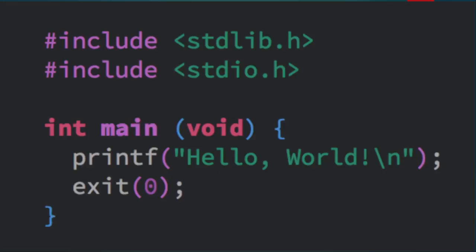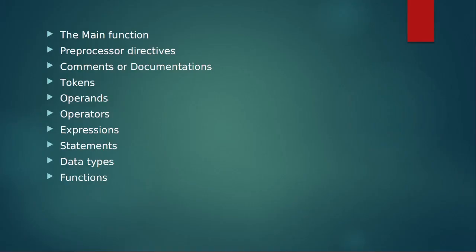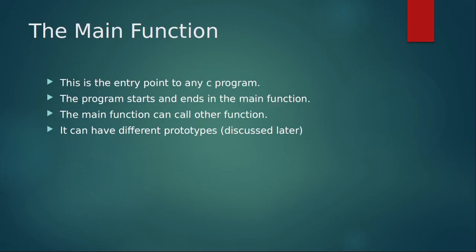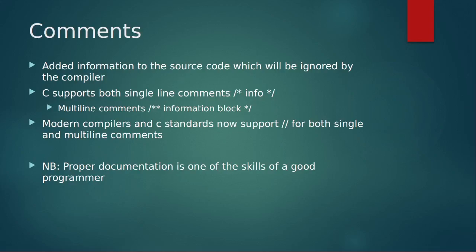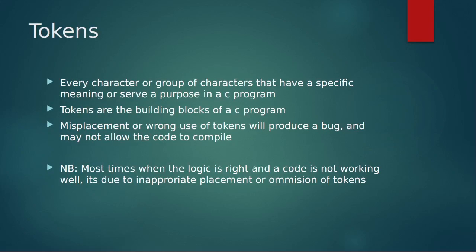We've looked at generally how the program looks like. We wrote a program, hello world, and then we tried to look at the different parts of the programming language. We started with the main function. After the main function, we looked at the preprocessor directives, and then we looked at the comment, how to write comments in C language. And then we started a discussion on token.